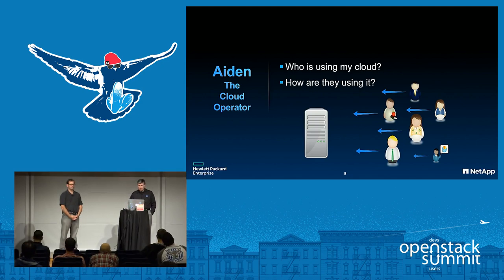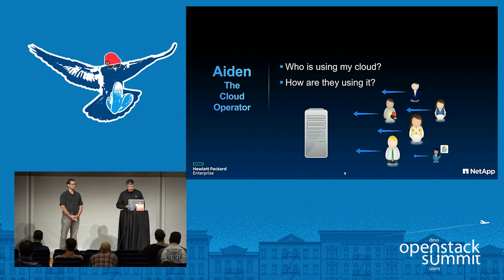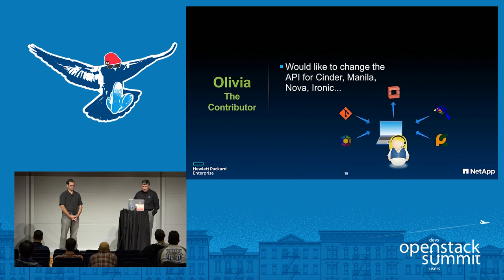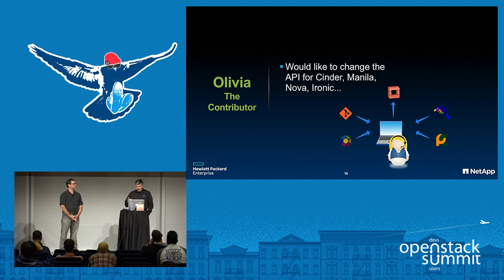Aiden is a cloud operator — he's the one deploying the OpenStack services, managing the users. He needs to understand who is using the features of his cloud, or conversely, who's not using certain features when they get old enough. He needs to know when it's safe to upgrade in such a way that some really old features might change incompatibly or disappear altogether. And then finally, like Scott and myself, Olivia is a contributor to the OpenStack projects. Historically the major API versions only happened once every few years, but she doesn't want to wait months or years for the next major version to get her feature into the projects.